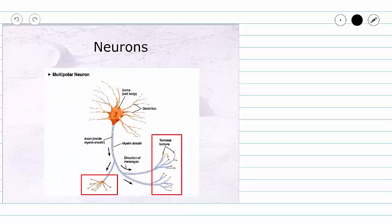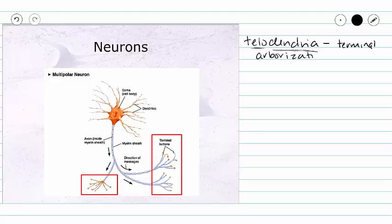Lastly, as our action potential is going to reach the end of the axon, many of our neurons have telodendria. If we break down this word, telo means end, like telophase is the last phase of mitosis, or telephone, you're talking to a person on the end of a line. And then dendria, like our dendrites, is going to mean branches. So telodendria are sometimes called terminal arborization, which literally means the same thing. End branches.